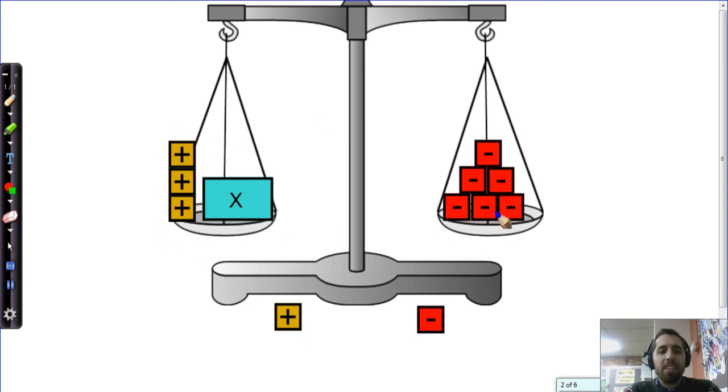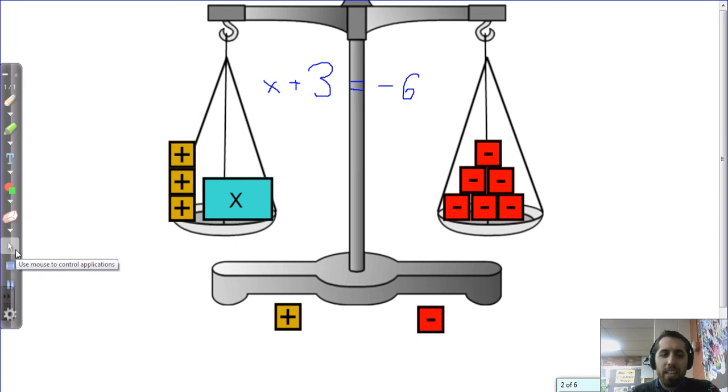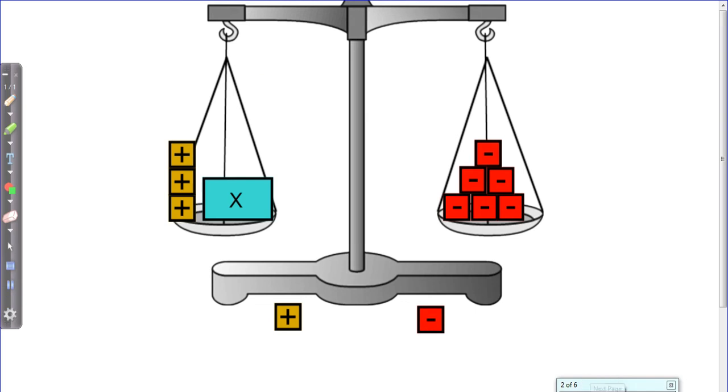But we can see these values. We can see three positive tiles, and we can see six negative tiles over here. This actually expresses an equation. It tells us that two things are equal on the scales of justice. We have negative six on the right, and that's equal to X, whatever it may be, plus three positive tiles. So X and three more tiles is going to be equal to negative six. We can use this to try and figure out what is inside this X-Box. We can use some operations to solve for it.